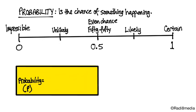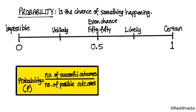But here's the little formula we're going to use to actually do this calculation. The probability of something happening is the number of successful outcomes divided by the number of possible outcomes. Let's look at a couple of examples to see how that works.